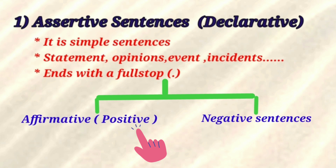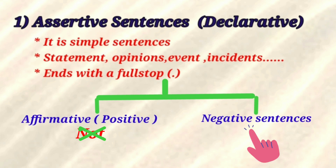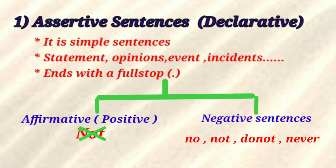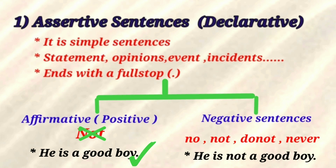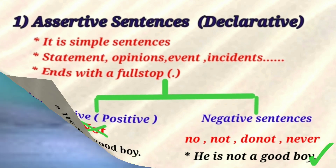Affirmative sentences are those in which 'not' is not used. Negative sentences are those which contain 'not', 'do not', 'does not' — these words make a sentence negative. Both together make assertive sentences. For example: 'He is a good boy' is an assertive sentence. 'He is not a good boy' is also an assertive sentence because it is a simple sentence ending with a full stop.